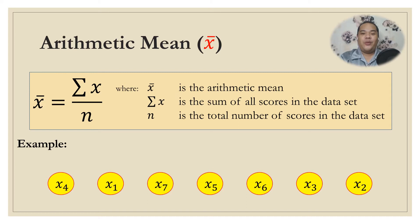Here we have the formula for finding the arithmetic mean: x̄ = Σx / n, where x̄ is the arithmetic mean, Σx is the sum of all scores in the data set, and n is the total number of scores in the data set. Consider a data set with seven scores: x₄, x₁, x₇, x₅, x₆, x₃, and x₂. How do we get the mean?